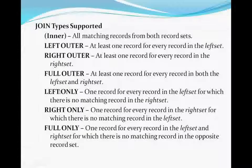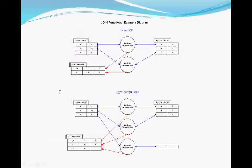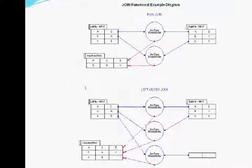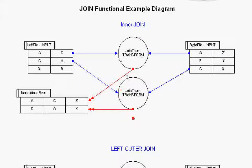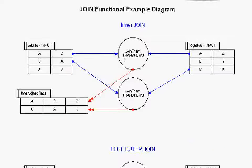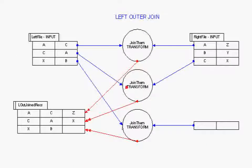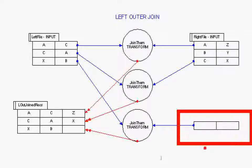Here we see a graphical representation of the two most commonly used join types — inner and left outer. For the inner join, just the matching records are passed to the transform function. For the left outer join, in addition to the matching records, the non-matching XB record on the left is passed to the transform function along with an empty record on the right.